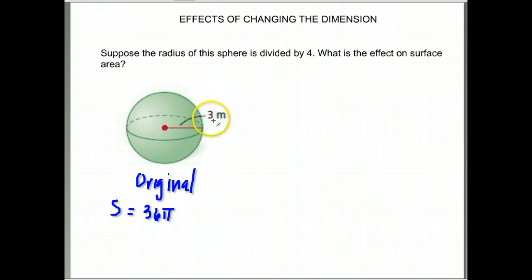What would its surface area be if we divided this by 4? So 3 divided by 4 gives me a new radius of 0.75. So let's see what would the effect be on the surface area if we divide the radius by 4. We divided our radius of 3 by 4.